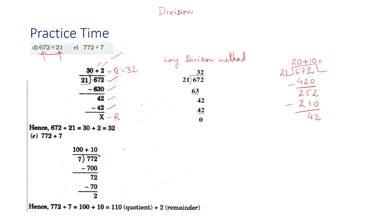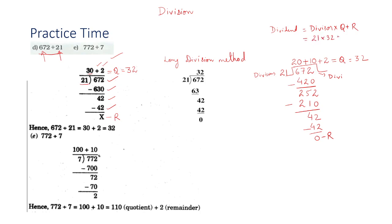The remainder after subtracting 210 from 252 is 42. Put a plus sign and multiply 21 by 2, since 21 times 2 equals 42, giving a remainder of 0. The quotient is 20 plus 10 plus 2, which equals 32. You can verify: dividend equals divisor times quotient plus remainder, so 21 times 32 plus 0 equals 672. Correct!